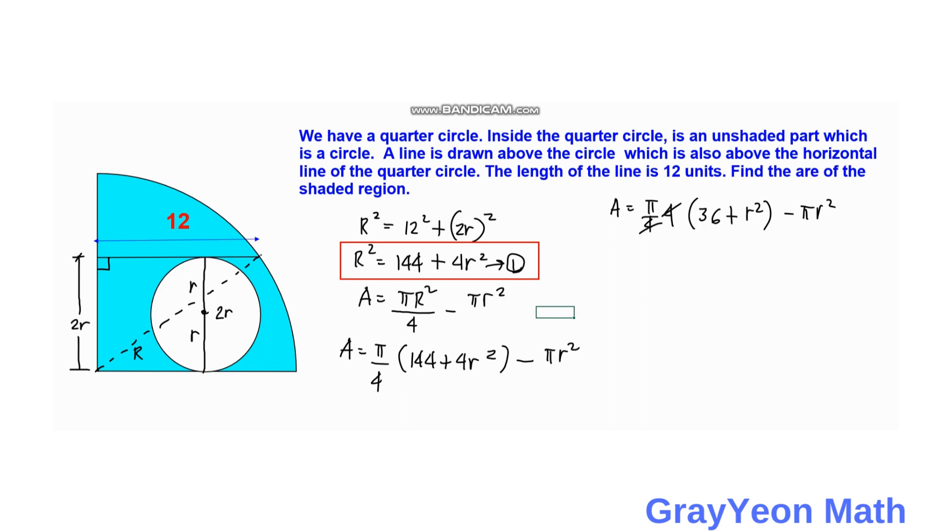So we have area is equal to 5 times 36 minus pi R square so we can cancel this out 4 in 4. So we have area is equal to pi times 36 and 5 minus pi times pi minus pi plus pi minus pi R square and we just simply cancel this out.